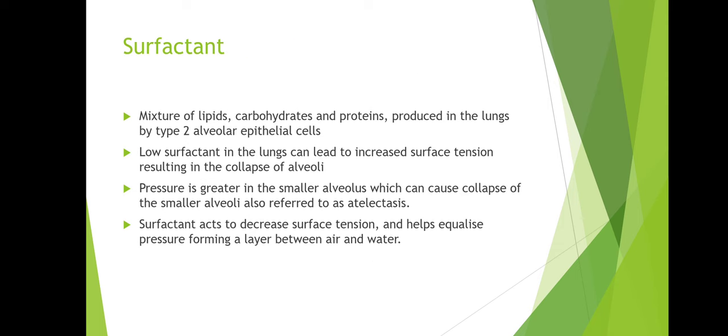So what is surfactant? Surfactant is made within the lungs — within the body. It's a mixture of lipids, carbohydrates, and proteins produced in the lungs by the type 2 alveolar epithelial cells. So you have your lungs, your alveolus, your type 1 pneumocytes which help with gas exchange, and your type 2 pneumocytes which help with surfactant production. Low surfactant within the lungs can lead to increased surface tension, resulting in the collapse of alveoli — referred to as atelectasis.